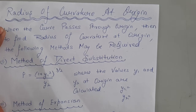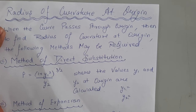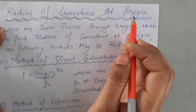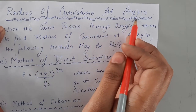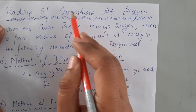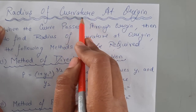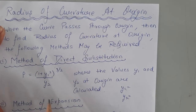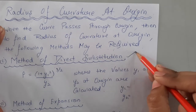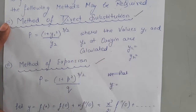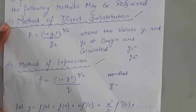Good morning students. In today's class we are going to discuss radius of curvature at origin — meaning when the curve passes through the origin we are required to find the radius of curvature. To find the radius of curvature we have three methods: first is the method of direct substitution, second is the method of expansion, and third is Newton's method.